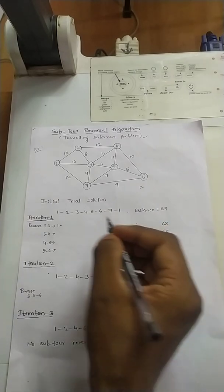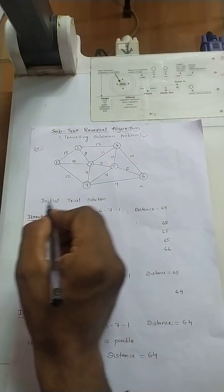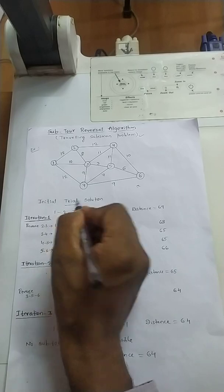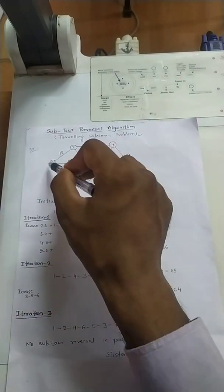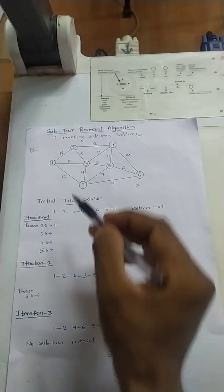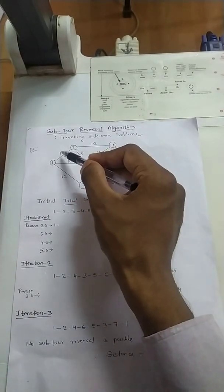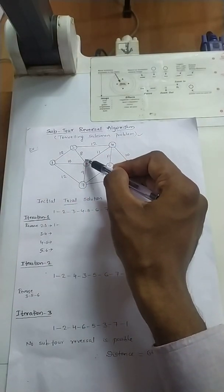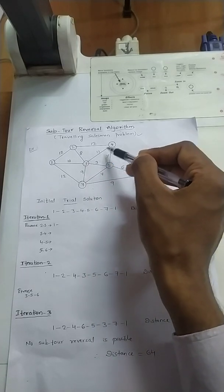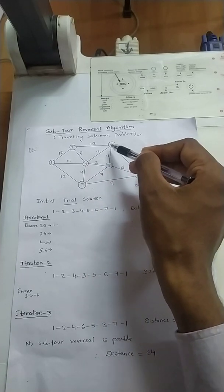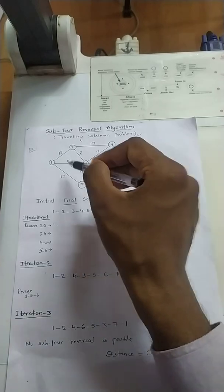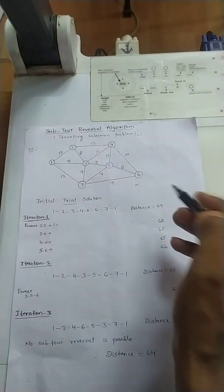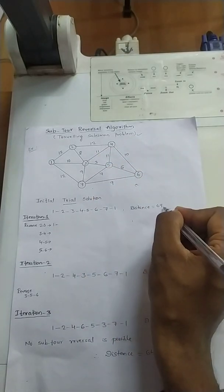Initially, we will randomly have one trial solution. I am taking 1, 2, 3, 4, 5, 6, 7 and again coming back to 1. What is the distance of this? From 1 to 2 it is 12, plus 8 is 20, plus 11 is 31, and so on. By calculating all the node distances, you will get a total distance of 69. This is our trial solution.